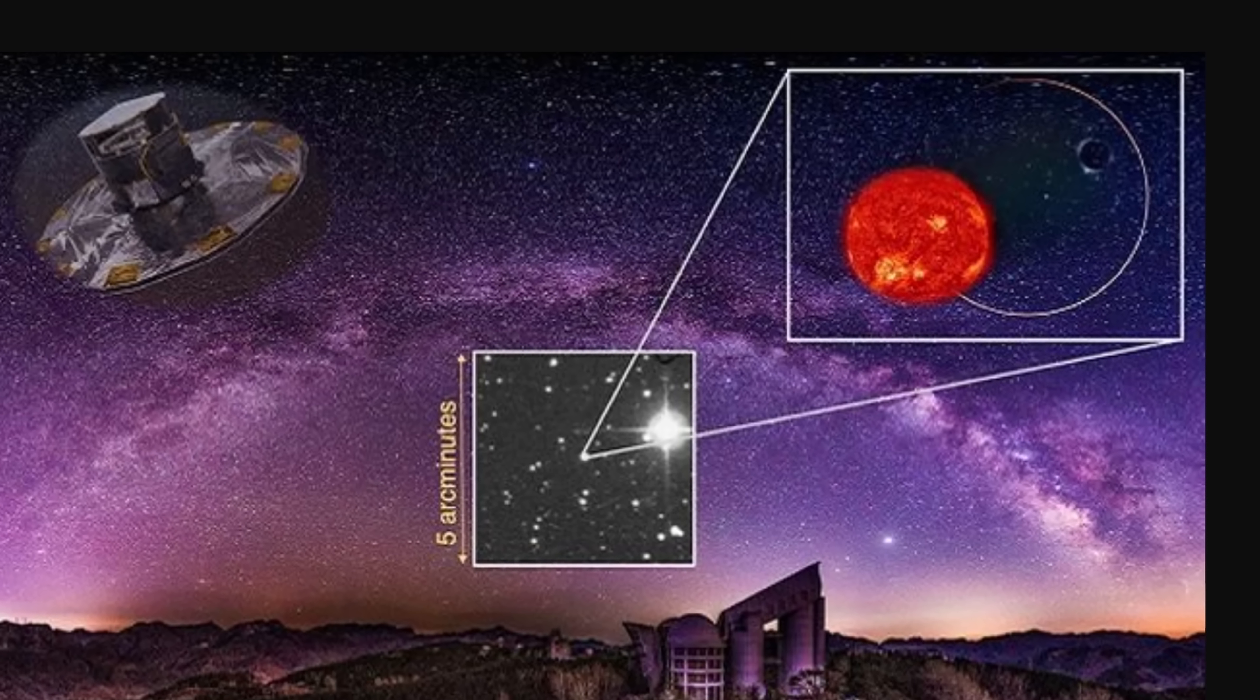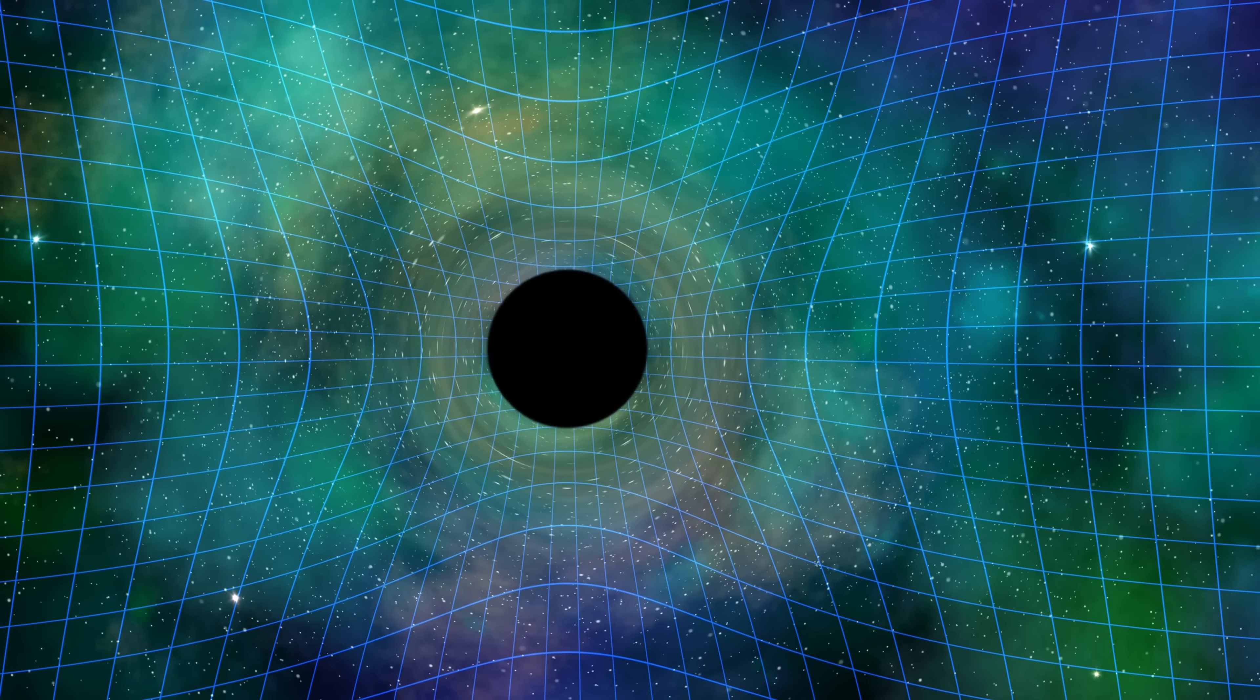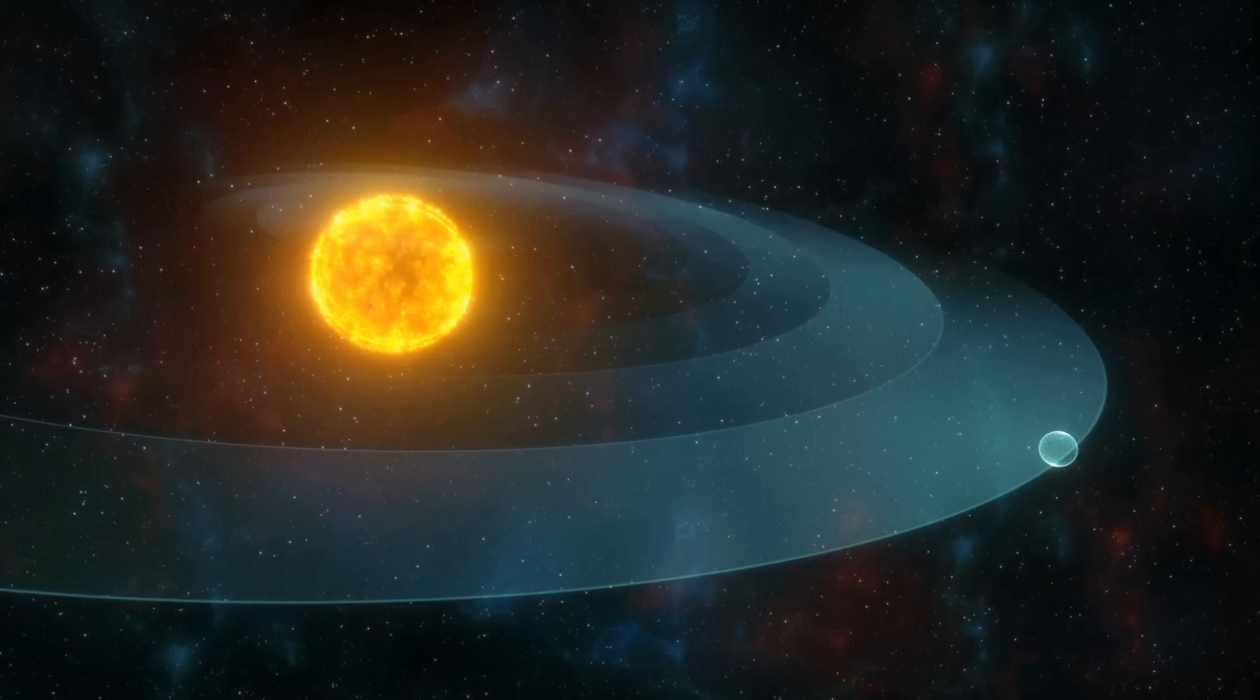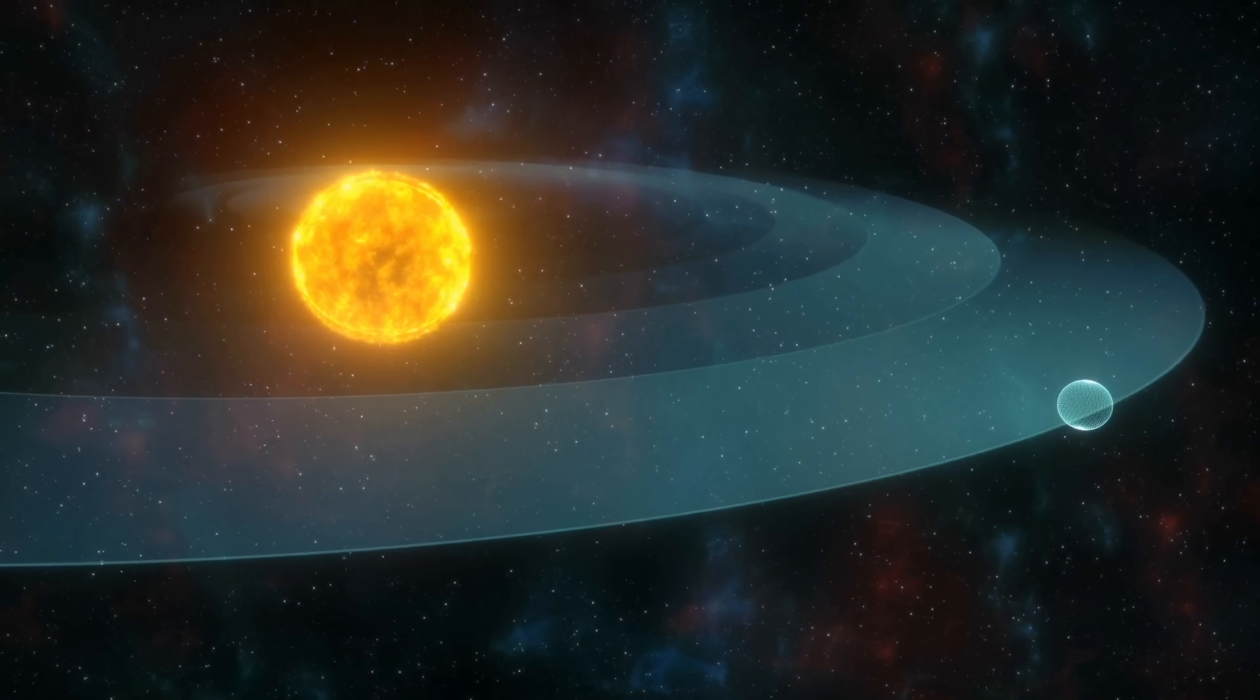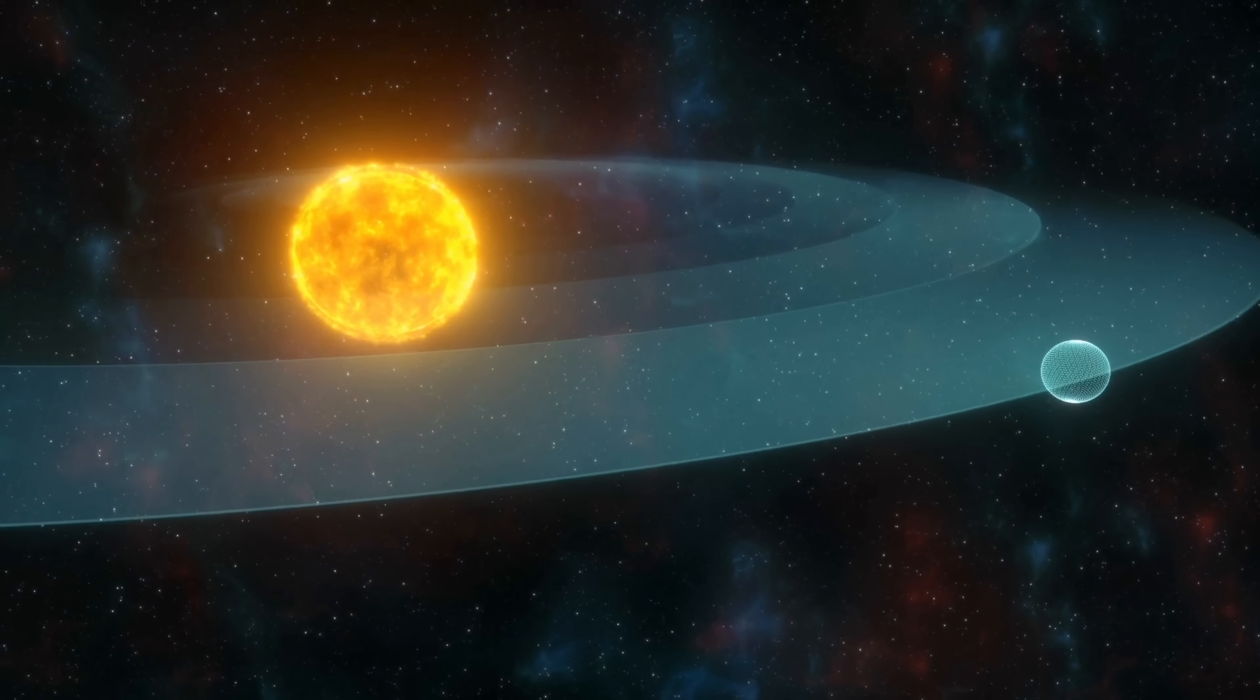Yet it was pretty clear that this was a very specific binary: an invisible object and a star approximately 2.7 solar masses in an almost perfect circular orbit. So what exactly are we looking at, and if this is a black hole, how can it possibly exist?